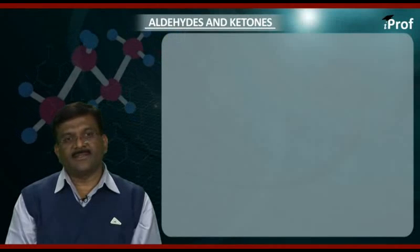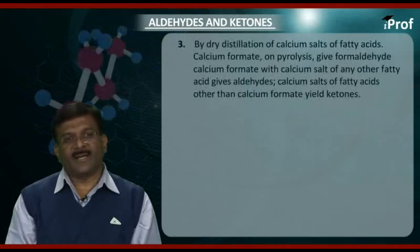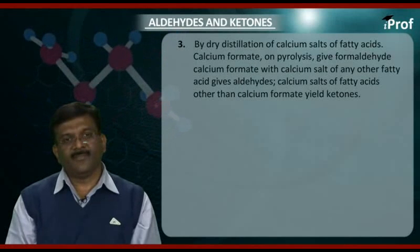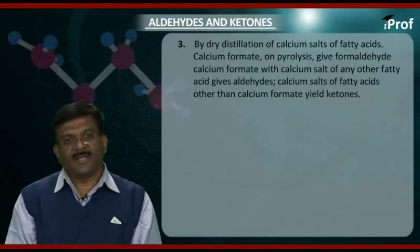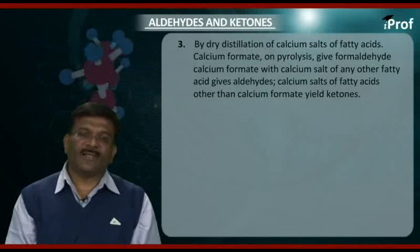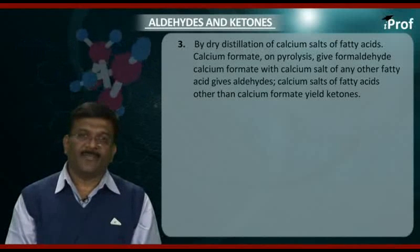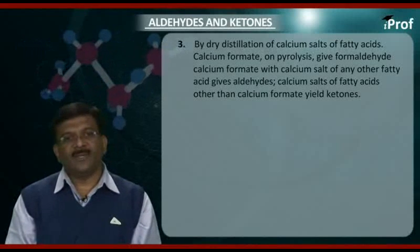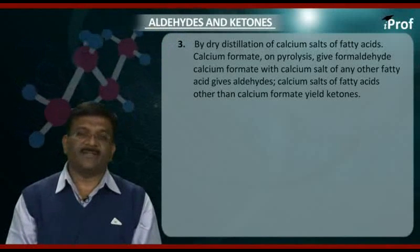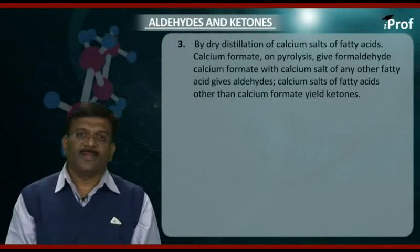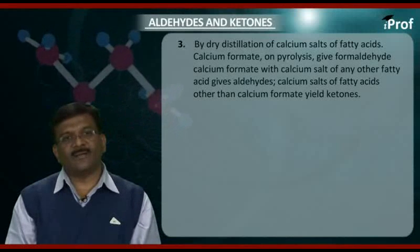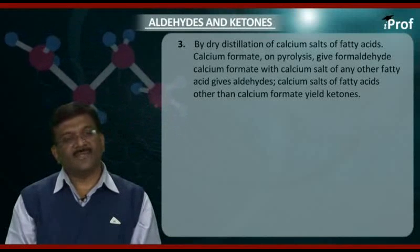The next method of preparation is by dry distillation of calcium salts of fatty acids. Calcium formate on pyrolysis gives formaldehyde. Calcium formate mixed with calcium salts of any other fatty acids gives aldehydes. Calcium salts of fatty acids other than calcium formate gives ketones.